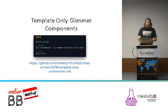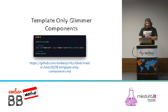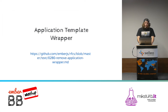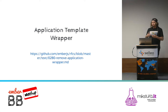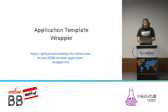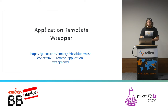We need to install it through the optional features add-on and then we can use it. The last one is the application template wrapper. We all know that when Ember mounts the application, it always creates another div for the application. With this feature, we can remove that div, so Ember will just render things in the body or another element specified in our environment.js.